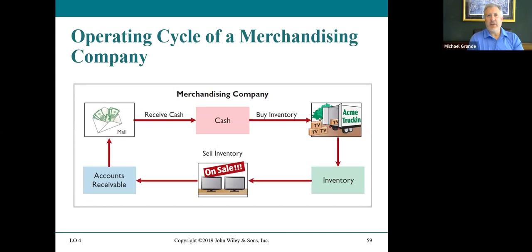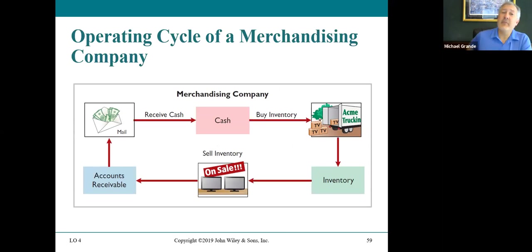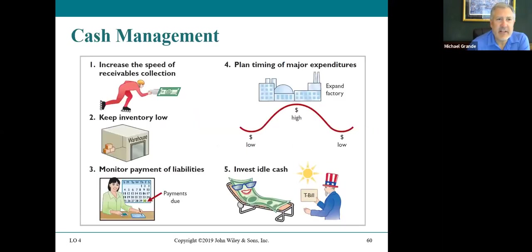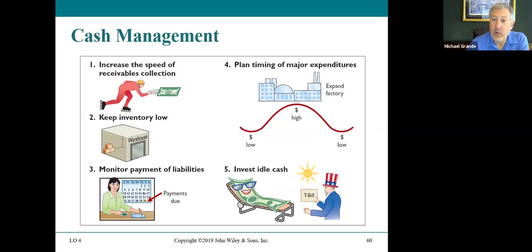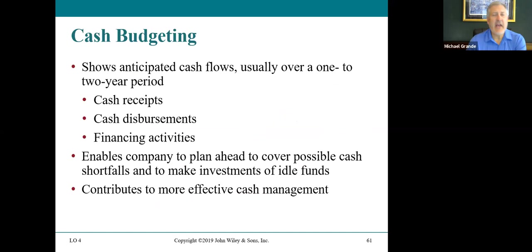The operating cycle of a merchandising company: they have cash, they buy inventory, they sell that inventory, it becomes a receivable, they receive the cash and start over again. Cash management aims to increase the speed of receivable collection, keep inventory low to preserve cash, monitor the payment of liabilities to maximize cash held, plan the timing of major expenditures, and invest idle cash. The goal is to preserve as much cash as possible.